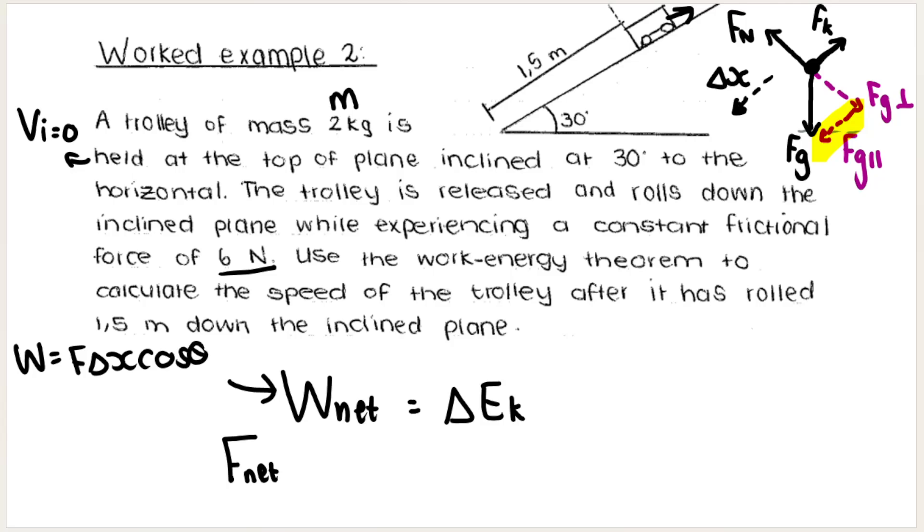If I'm looking for net work, so if this is net work, the F that I can use here to help me get net work in one shot is Fnet. So I'm going to be using that formula: Fnet multiplied by Δx multiplied by cos θ, and that's going to be equal to the change in kinetic energy.